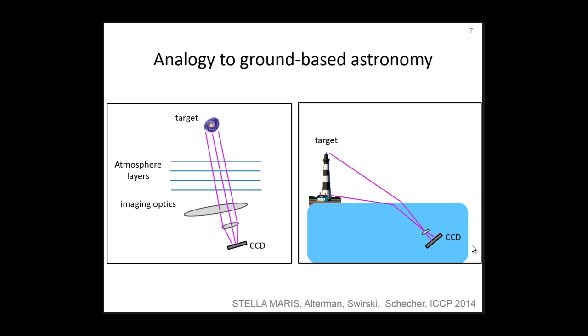We observe an analogy between our problem and ground-based astronomy. Telescopes observe a distant object through atmospheric layers. Here, an underwater camera observes an airborne object through a flat water surface. Ground-based astronomy is affected by turbulence in the air. Thus, the image is degraded by random refractions. In analogy, images taken by a submerged virtual periscope are degraded by the random refractive water surface.